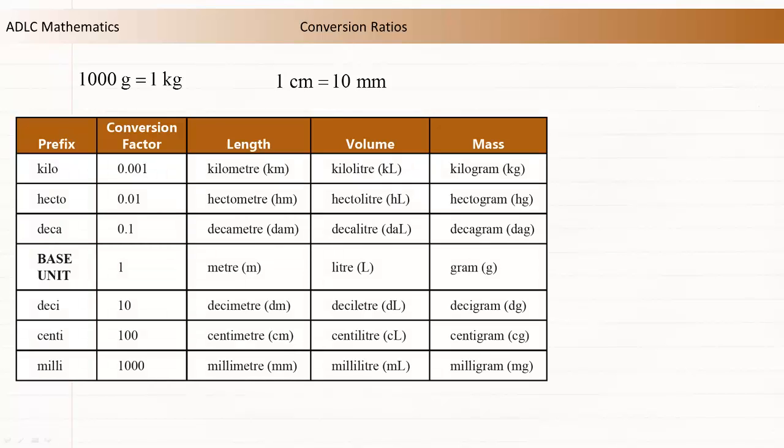Many other less common conversion ratios can be quickly determined using the prefix table located in your module. Let's look at writing a conversion ratio for hectometres and decimetres. The conversion factor for each prefix shows how many of that unit are equal to 1 base unit.